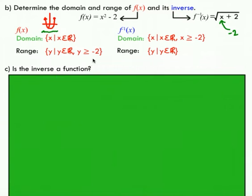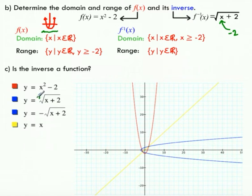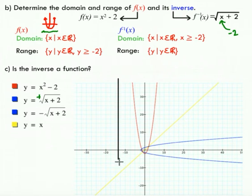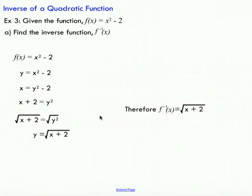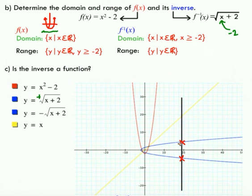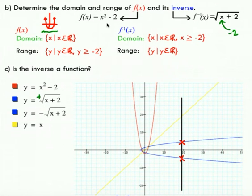Is the inverse a function? I want to graph both functions. My red function is the original parabola, the yellow line is y equals x. You'll see I've graphed two blue functions — the positive and negative components of the square root. The inverse is a reflection over y equals x, but because it has both positive and negative components, it fails the vertical line test. So this is not a function — taking the square root of y gives two solutions for y, which violates the vertical line test.